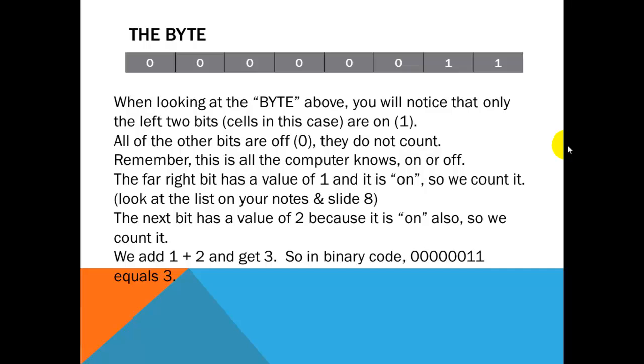So, let's do the first one. When you're looking at the byte above, and again, I'm using the term byte loosely. It's created so that you can understand it. You'll notice that only the right two bits. I got a typo there. Our cells, in this case, are both on. All of the other bits are off. They do not count. So, again, remember that this is all the computer knows, on or off, and it happens very, very fast. The far right bit has a value of 1, and it is on. So, we count it. The next bit has a value of 2, because it is on also. So, we count it. So, we add 1 plus 2, and we get 3. So, in binary code, 0 0 0 0 0 0 1 1 equals the number 3, as we humans would understand it.